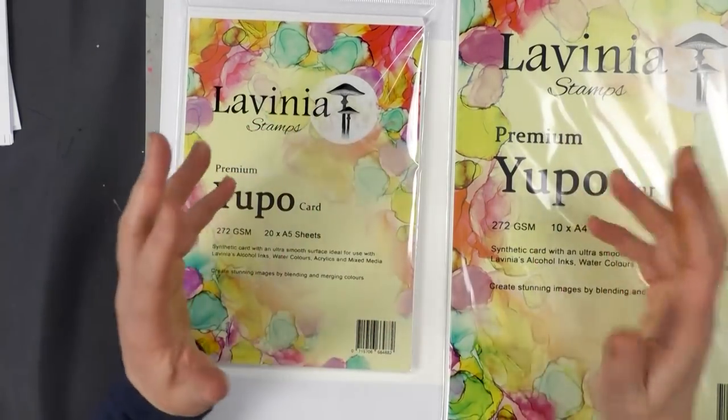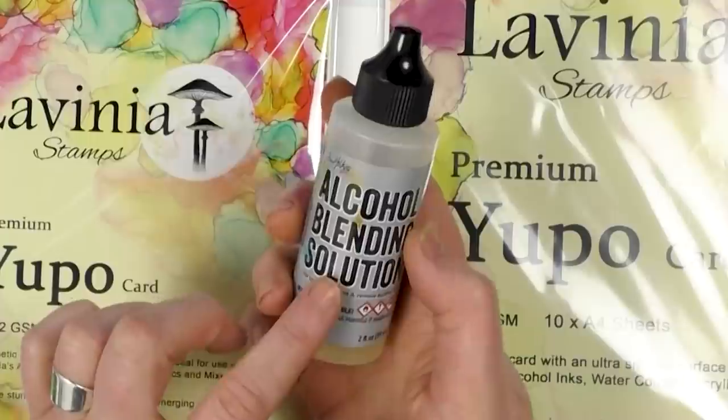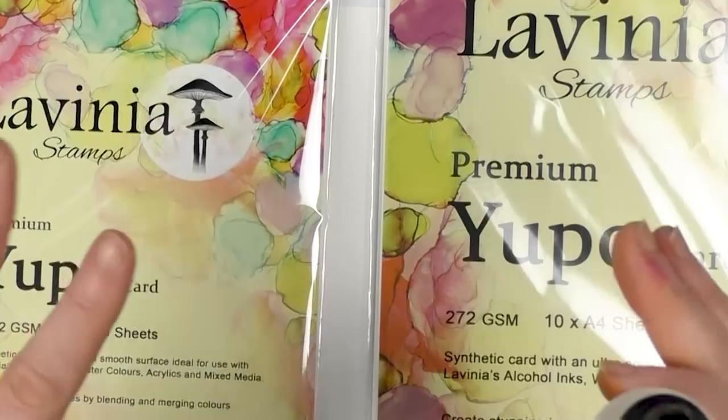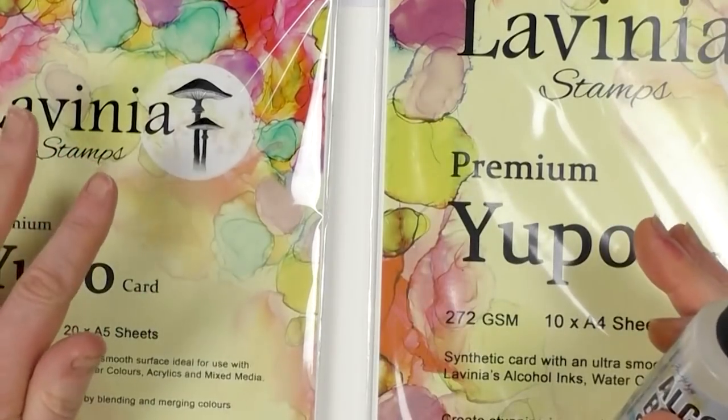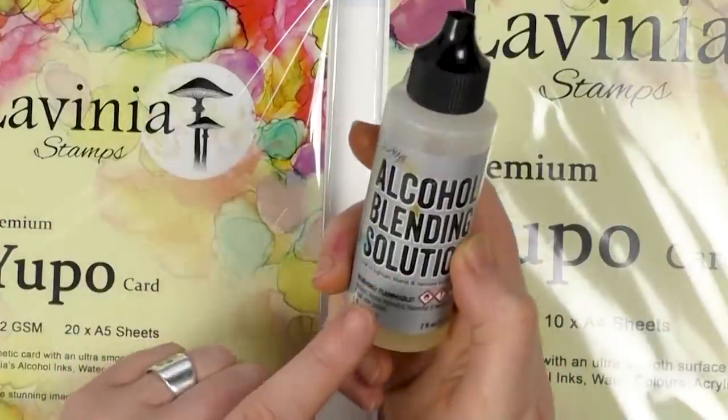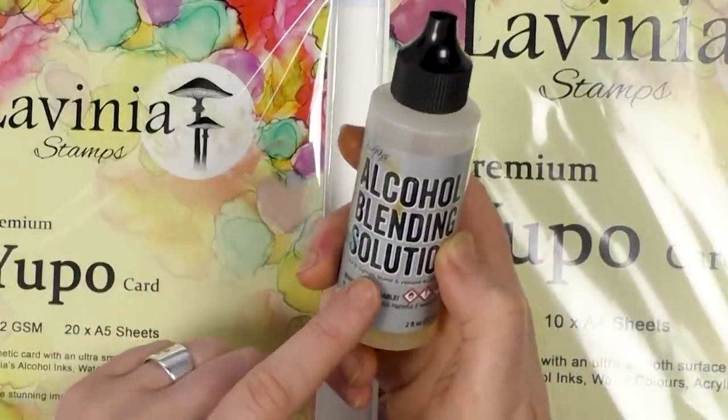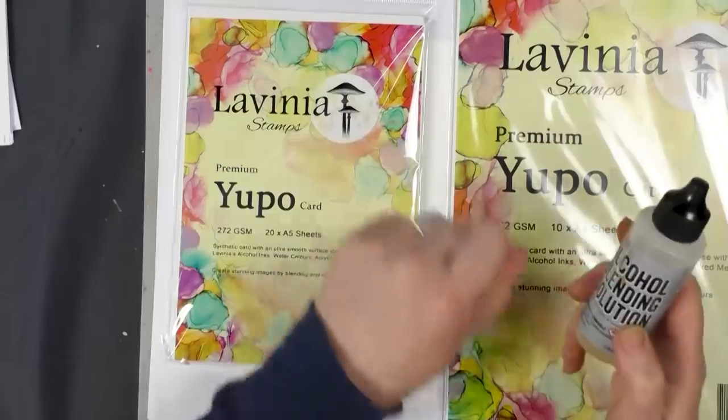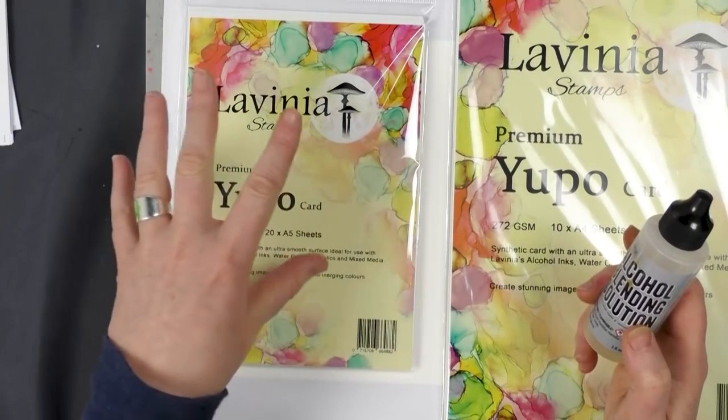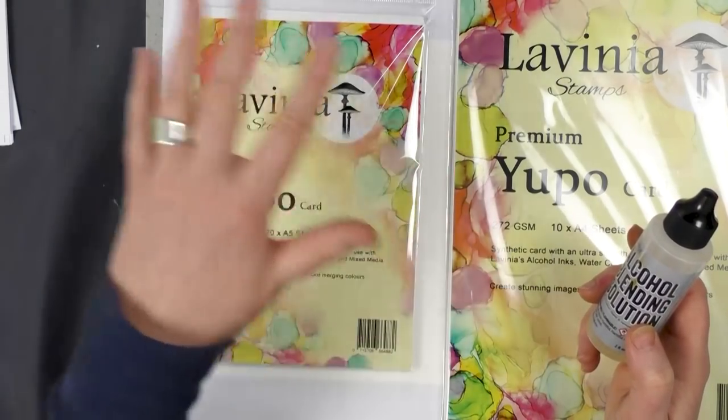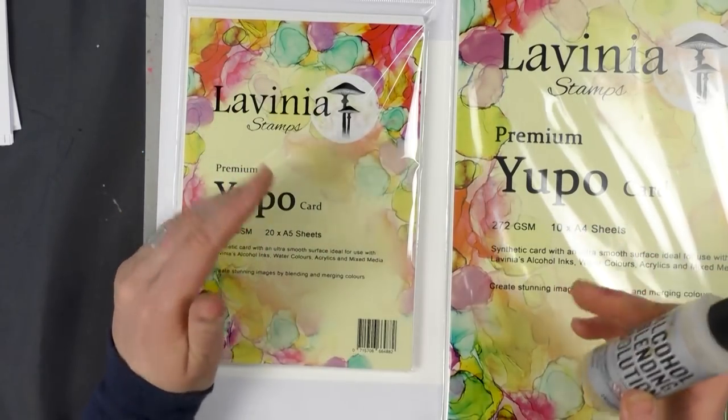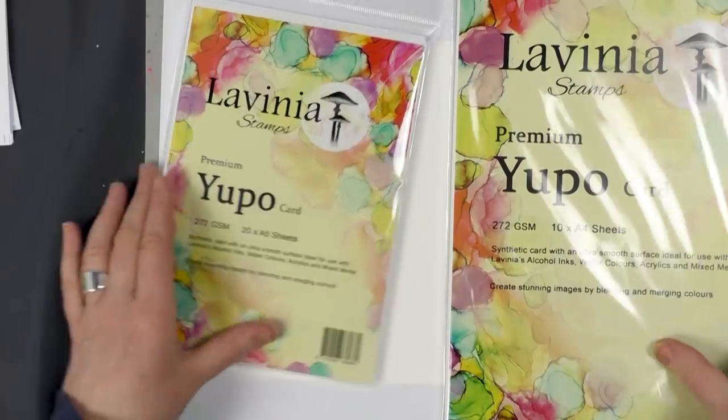But you have plenty of time as long as you're using the alcohol blending solution. Now if your image sets and the alcohol evaporates, you can still add the alcohol blending solution to get it moving again if there was an area that you wanted to perhaps fade out or add a little bit more color.